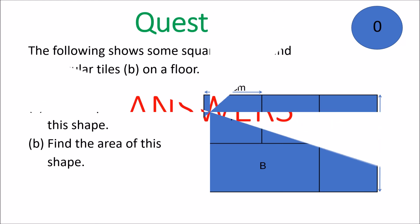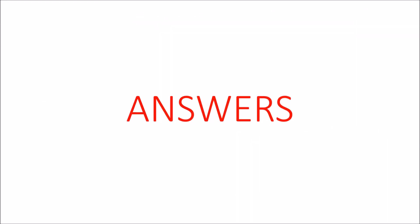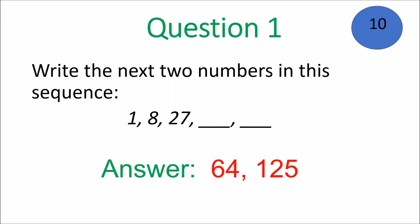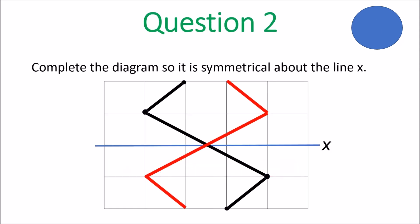And here we go with the answers. Question number 1: the next numbers would be 64 and 125. We're dealing with cube numbers, so 1 cubed is 1, 2 cubed is 8, 3 cubed is 27, 4 cubed, then 5 cubed. To complete the diagram, that's how you would draw it so it is symmetrical about the line X.